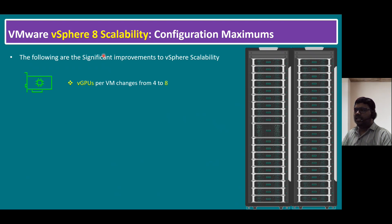The following are the significant improvements to vSphere scalability. The first key point in vSphere 8 is virtual GPUs per virtual machine — this changes from 4 to 8. Previously 4, now in the latest version it is 8. The GPU card, represented by this icon, needs to be inserted into the server at the physical layer through PCI (Peripheral Component Interconnect) devices — for example, NVIDIA GPU cards.